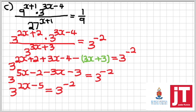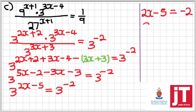Taking it to the other side, we're going to get 2x minus 5 is equals to negative 2. Then we get 2x is equals to 3. Solving for x, we're going to get x is equals to 3 over 2.